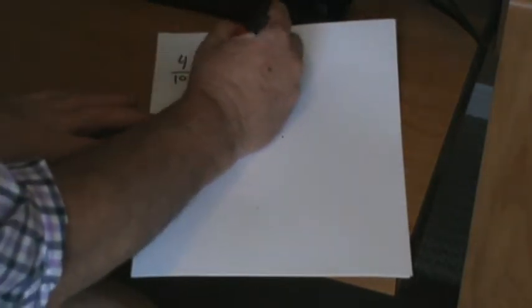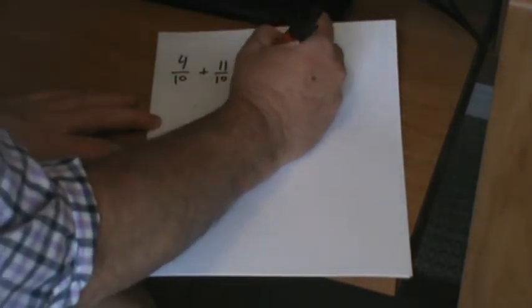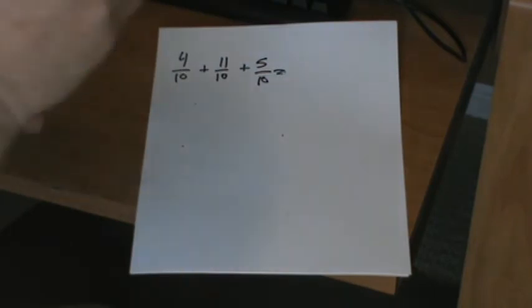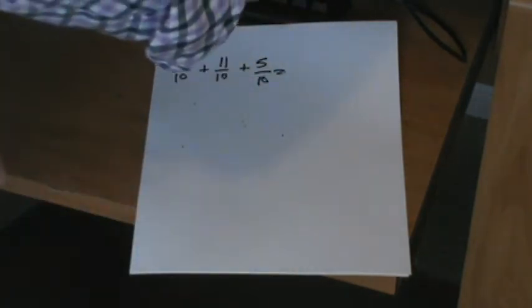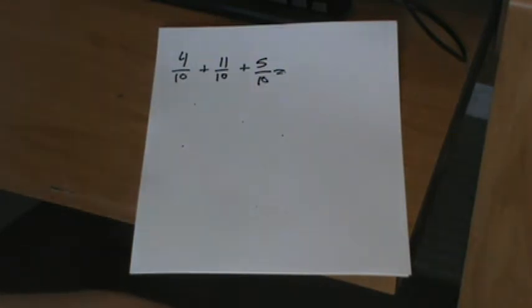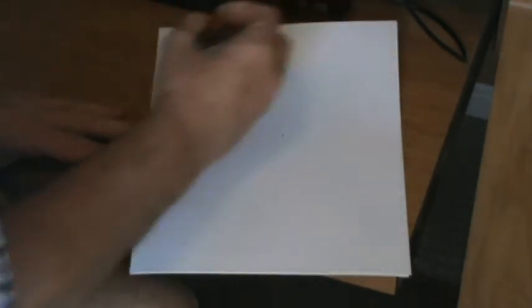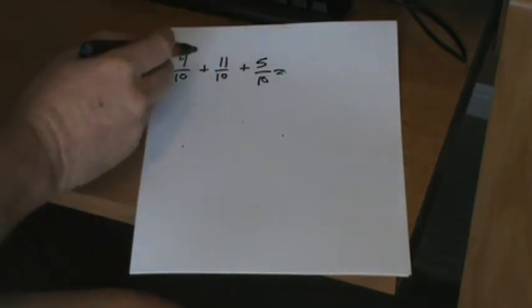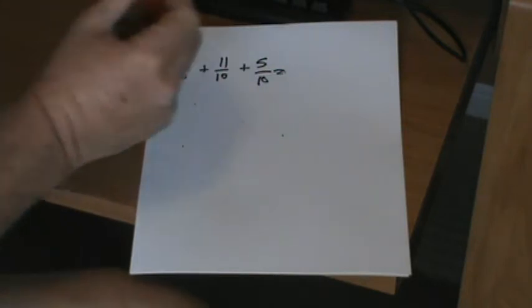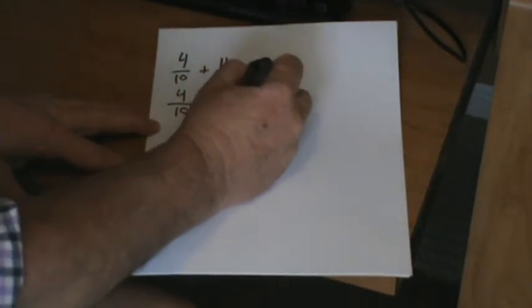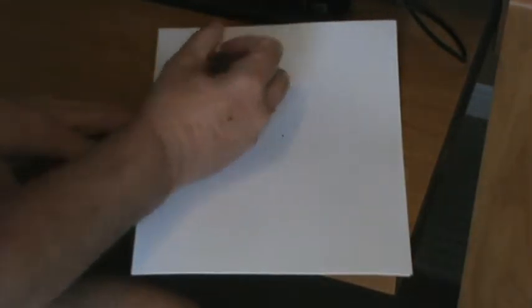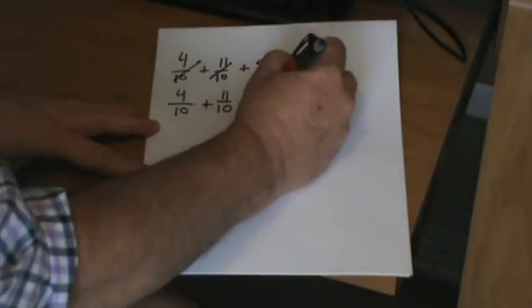We've got 4/10 plus an improper fraction, 11/10, plus 5/10. Let's see what we get here. 4 + 11 + 5. Let's go with the 4 + 11. 4/10 plus 11/10. How many tenths will that equal? 11, 12, 13, 14, 15. 15/10.